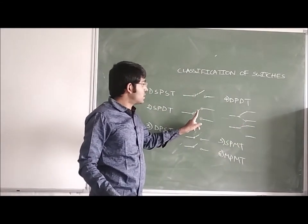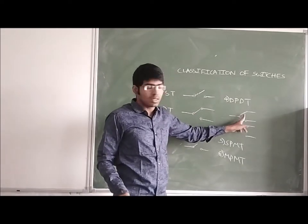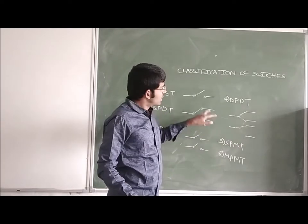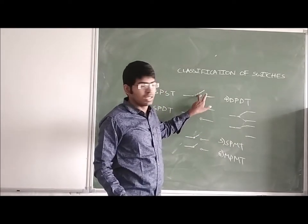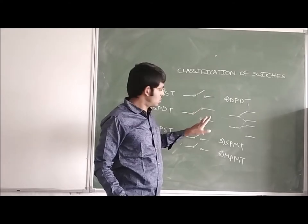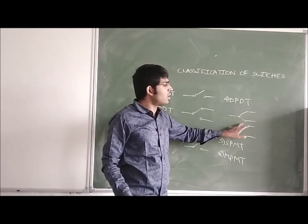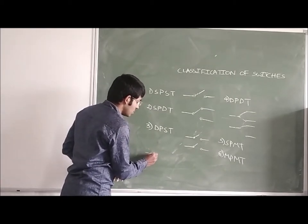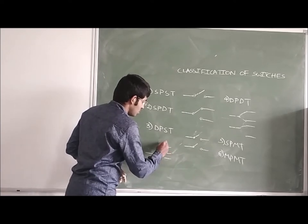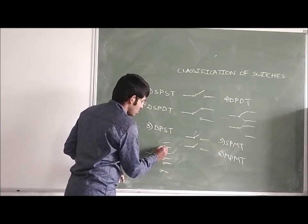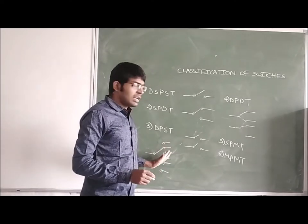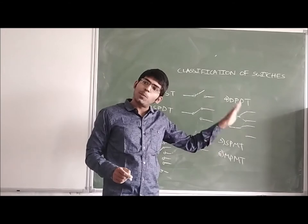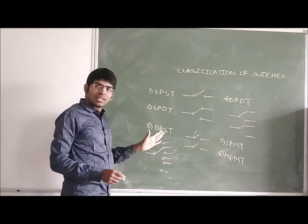This is a single pole single throw switch. This is a double pole single throw switch. This is a double pole double throw switch. This is a single pole multi-throw switch — we can use multi-throw here. Next is multi-pole multi-throw, where we can use multiple poles to connect to multiple throws.